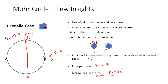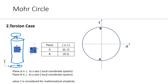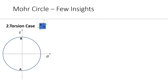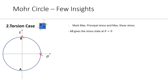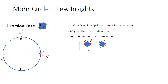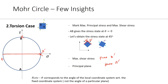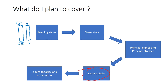Let's quickly go through the torsion case. The Mohr circle looks different from the previous case. There is a point with the maximum principal stress and a point with the maximum shear stress. A-B gives the stress state at theta equal to zero. Rotating A-B by 90 degrees gives A-dash and B-dash. A-dash is one plane and B-dash is the other. The maximum shear stress plane corresponds to B-dash and the principal plane corresponds to A-dash. With that, I have completed the Mohr circle and we are going to the final topic of failure theories.